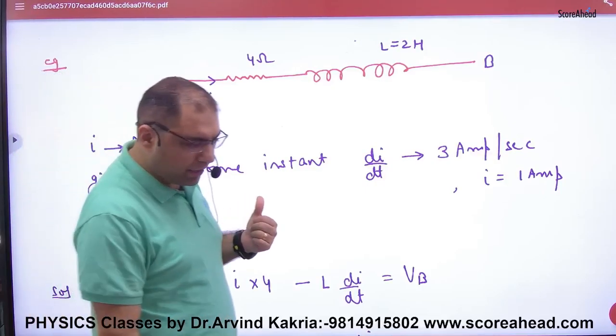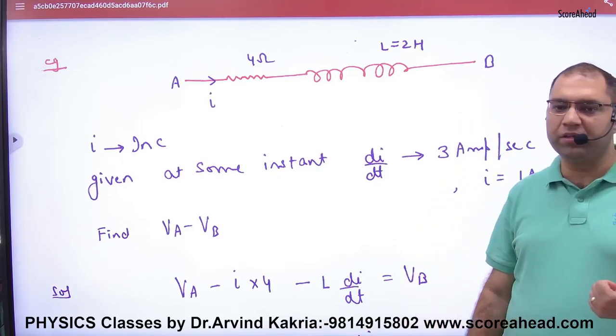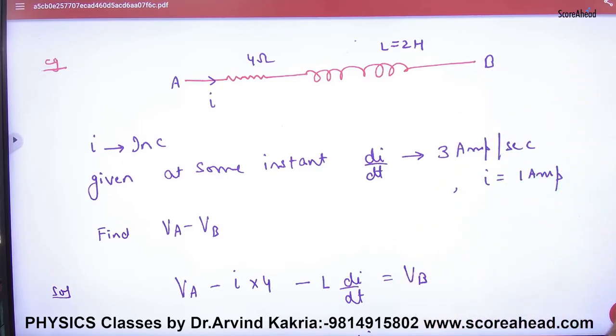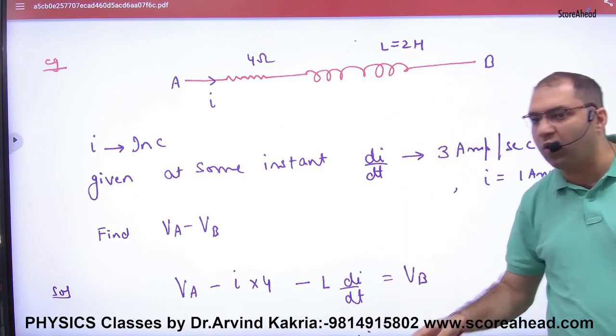In alternating current, there was a very important question in your last sheet in which suppose you have a resistor and an inductor. Current is passed and current is not constant, it is increasing.